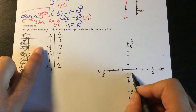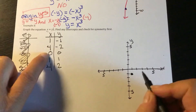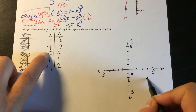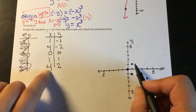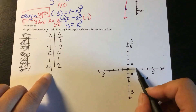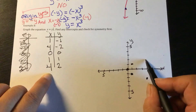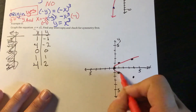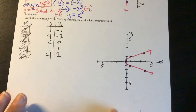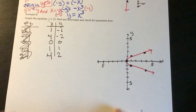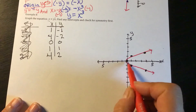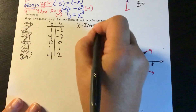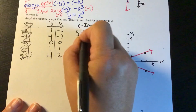I have (1, negative 1): over 1, down 1. (4, negative 2): over 4, down 2. (0, 0). (1, 1): over 1, up 1. And (4, 2): over 4, up 2. And here's my graph. The intercepts — the only place this graph crosses either axis is at (0, 0). So the x-intercept is (0, 0) and the y-intercept is (0, 0).